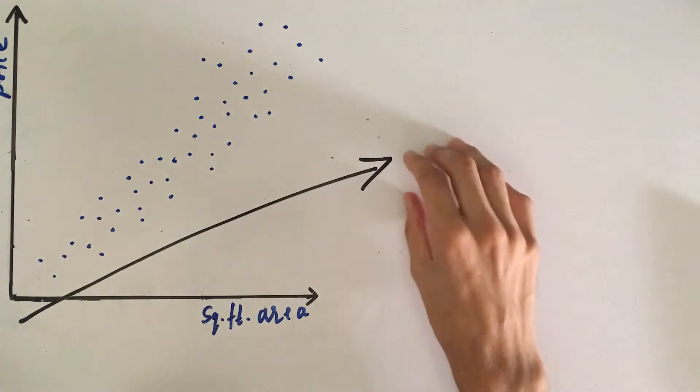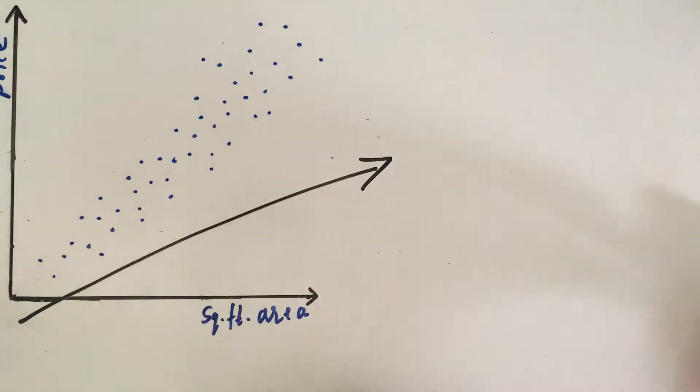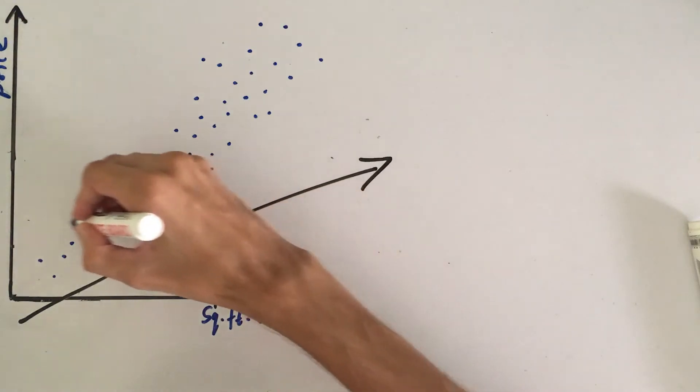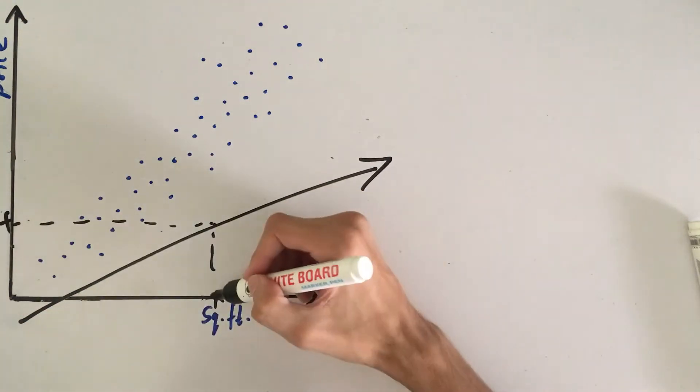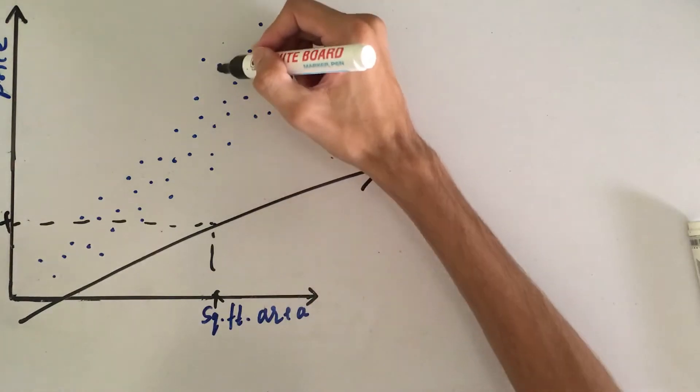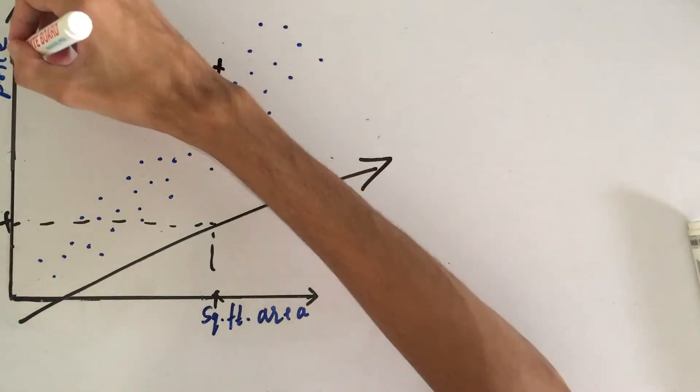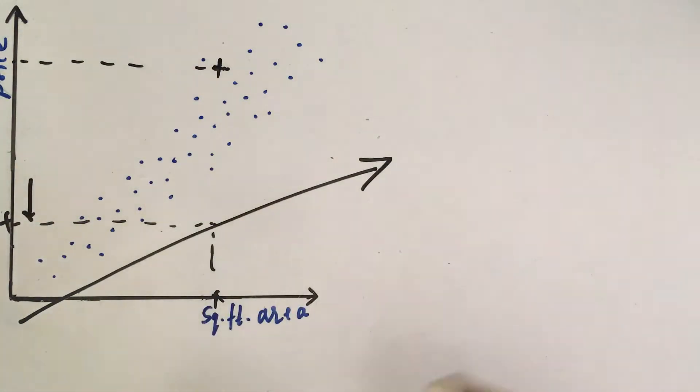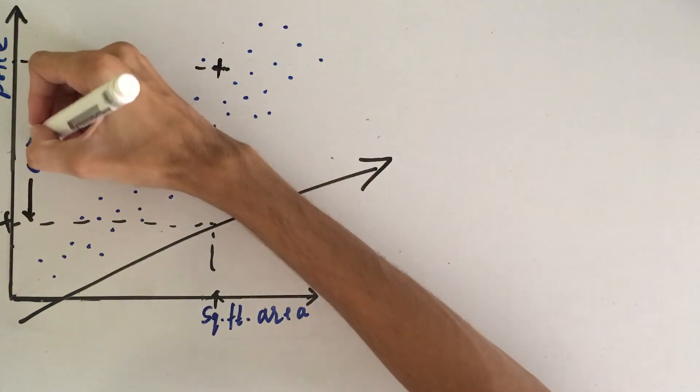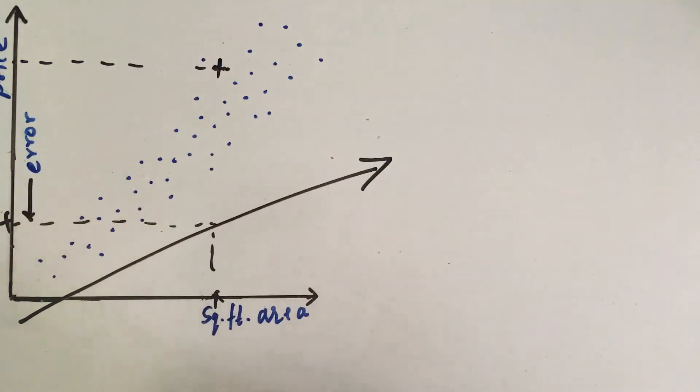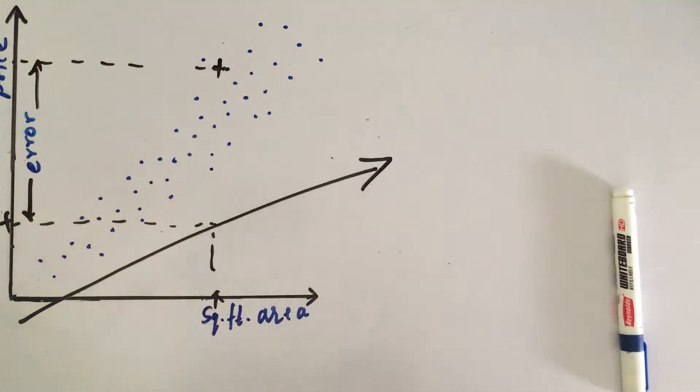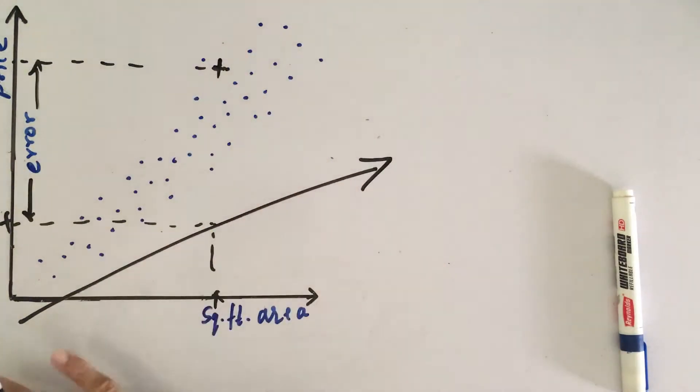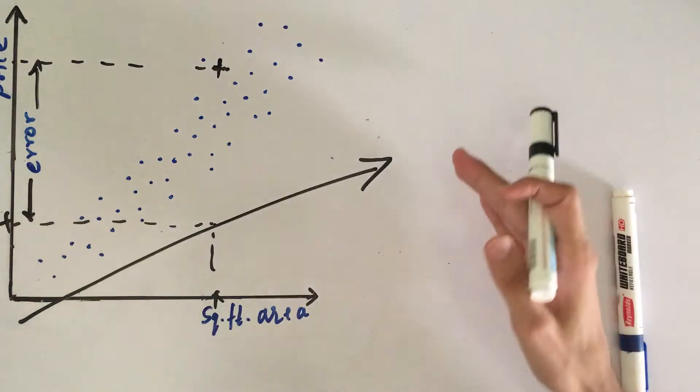Suppose if this were our prediction line, then the value for this square foot area would be here. But actually, the value of this square foot area should be around this. So, this is our error for this point.